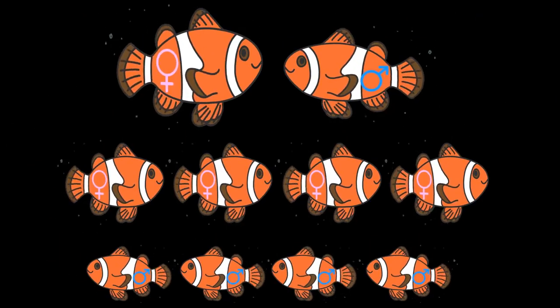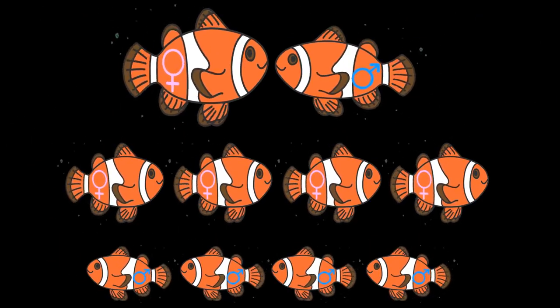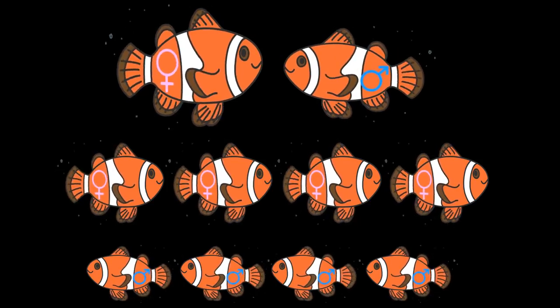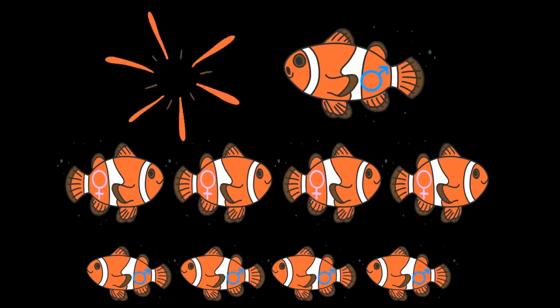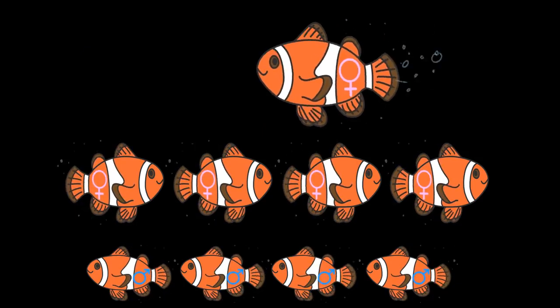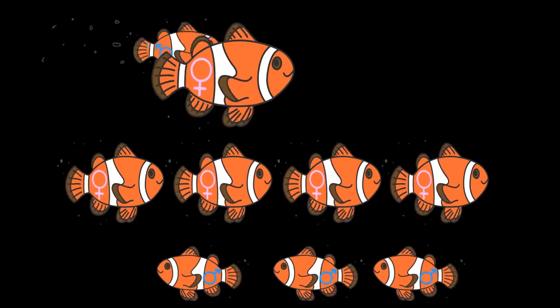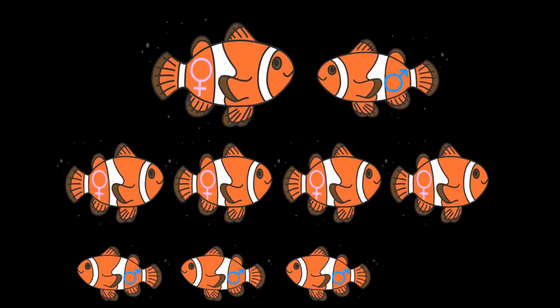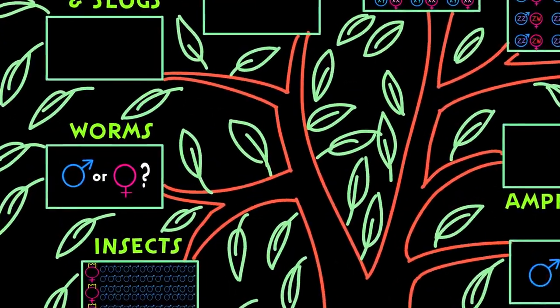And amazingly, if the dominant female in the group dies, the largest and most dominant male will then quickly become female and take her place, and all the other males will move up one rank in the hierarchy.